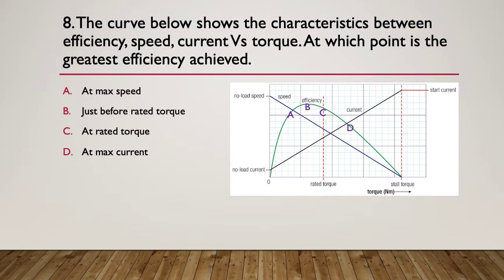Question eight, the curve below shows the characteristics between efficiency, speed and current versus torque. At which point is the greatest efficiency being achieved? A, at maximum speed, B, just before the rated torque, C, at rated torque or D, at maximum current.